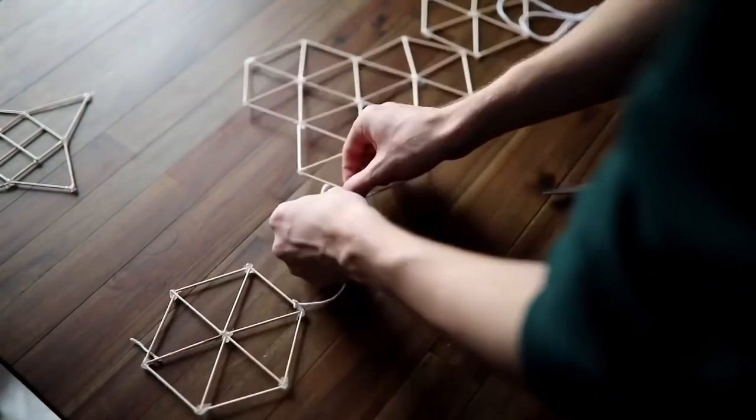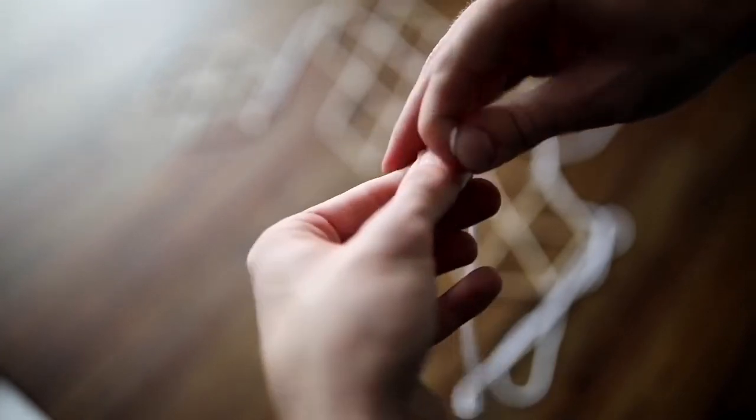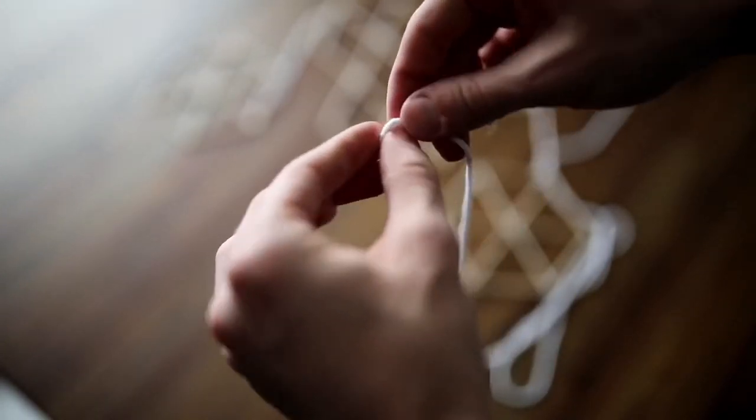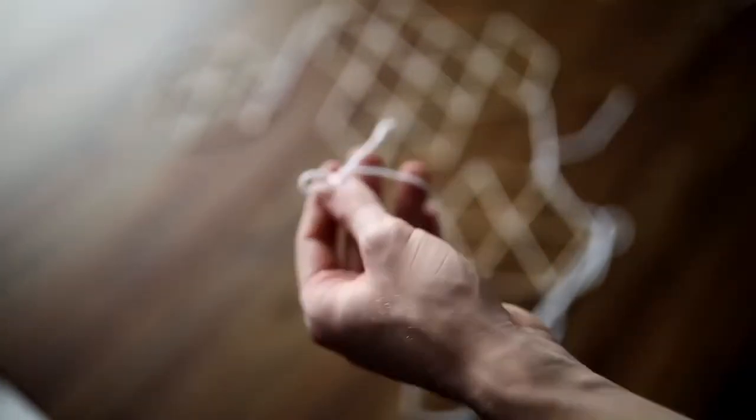You're just going to use about eight inches of yarn between each section to attach them together. Once you reach the end, just tie a little loop at the top that you can hang it off with, and that finishes off your brand new wooden geometric wall decor hanging.